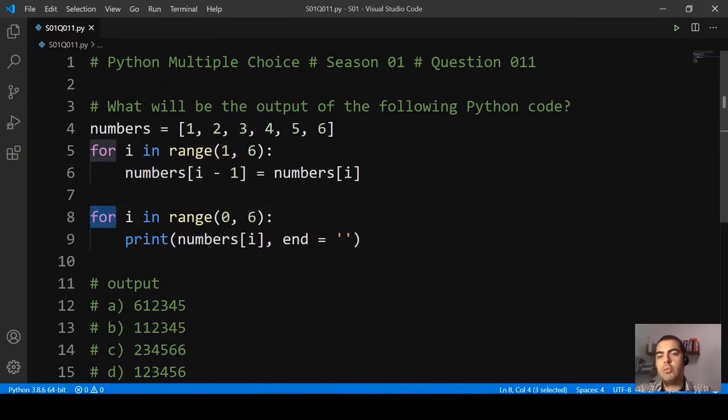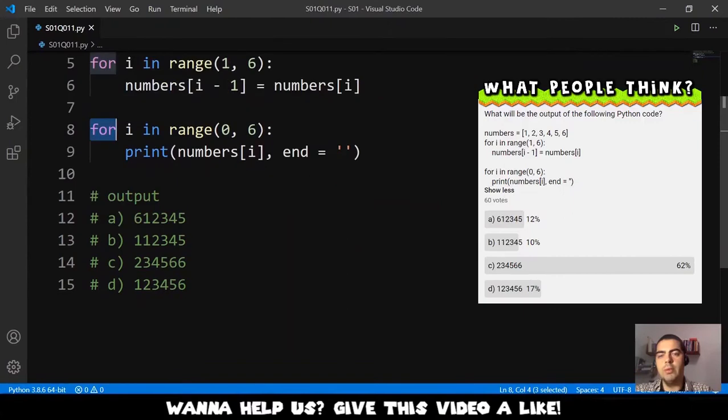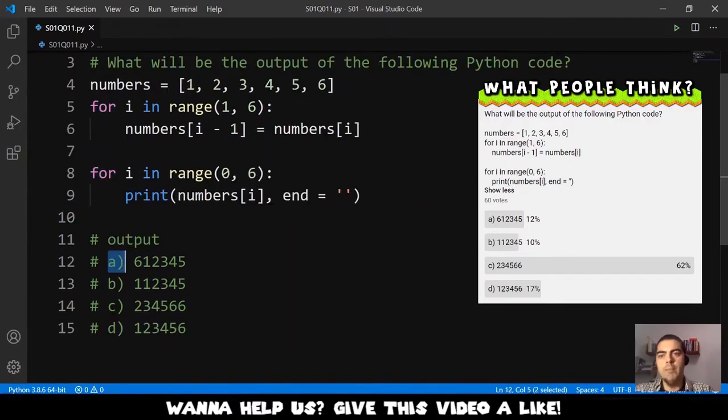The second for loop just prints the entire list and the options that we have here are: a) 6 1 2 3 4 5, b) 1 1 2 3 4 5, c) 2 3 4 5 6 6, and d) 1 2 3 4 5 6.